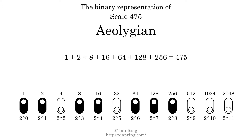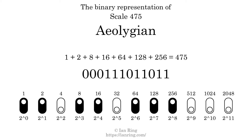That is why the scale number, in decimal, is 475. The scale number not only enumerates the scale with a unique index, but it also literally describes the tonal content of the scale, represented as a binary number in base 2.